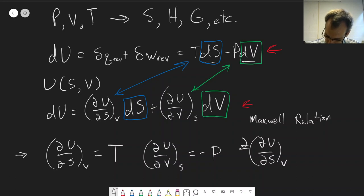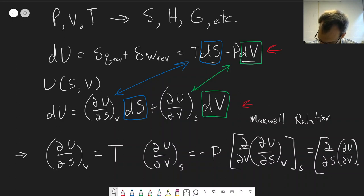and then take the derivative of that with respect to volume at constant entropy, that is equal to doing it the opposite way. So ∂/∂S(∂U/∂V)_S at constant V.